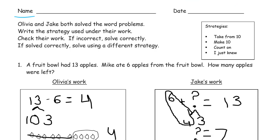Olivia and Jake both solve the word problems. Write the strategy used under their work. Check their work. If incorrect, solve correctly. If solved correctly, solve using a different strategy.